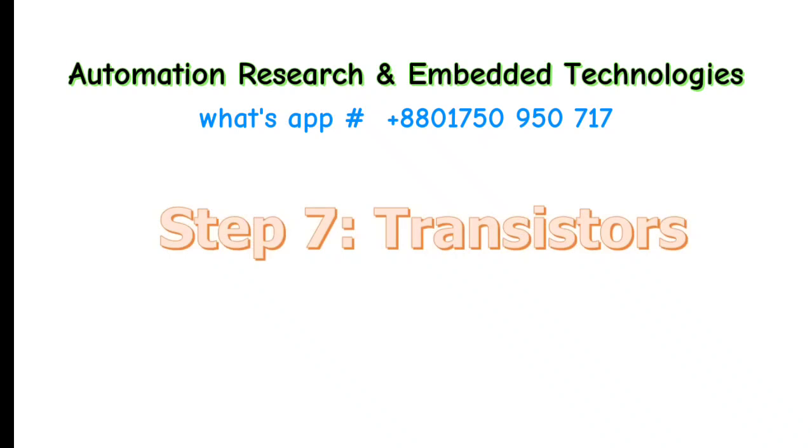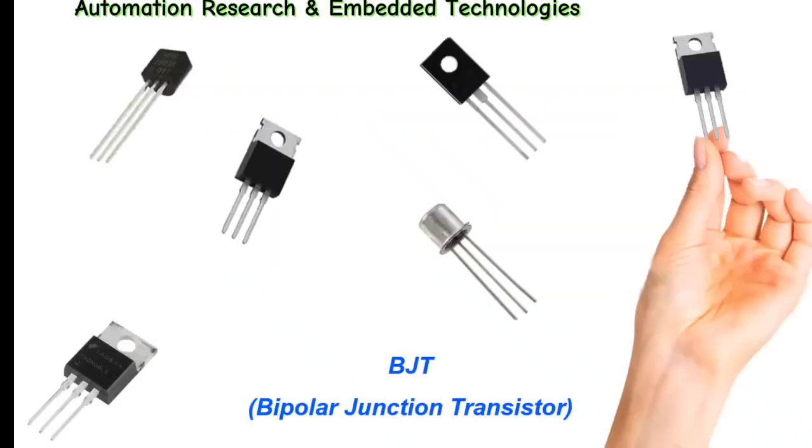Step 7. Transistors. A transistor takes in a small electrical current at its base pin and amplifies it such that a much larger current can pass between its collector and emitter pins.